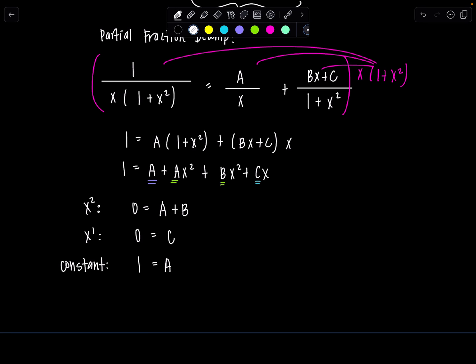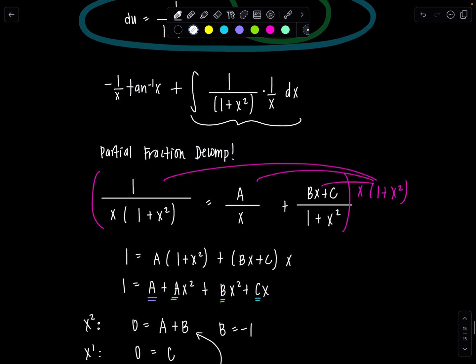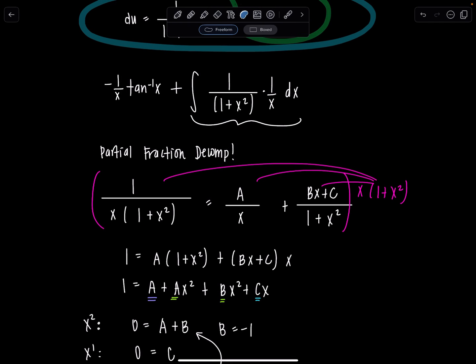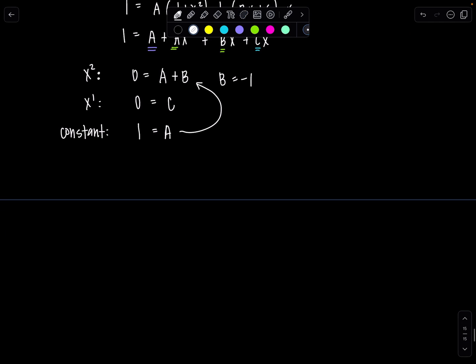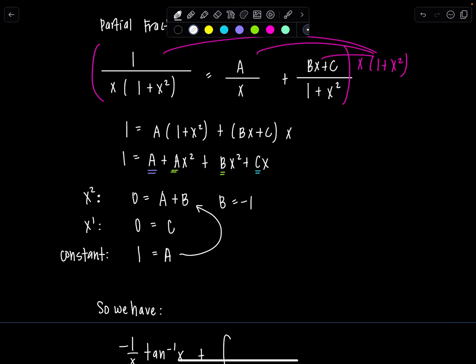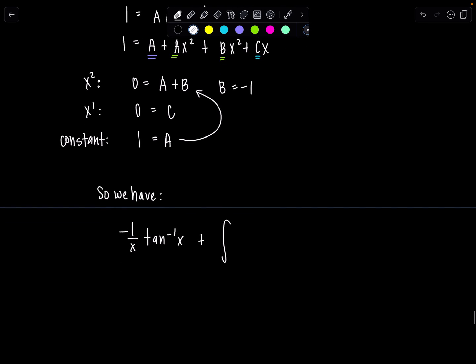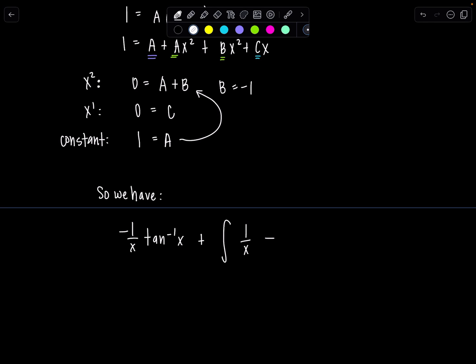So now that I know 1 is a, then that means b is negative 1. And then I'm ready to rewrite everything. So up above, we had all that negative 1 over x tan inverse of x. So now we have negative 1 over x tan inverse of x plus integral. And then a is 1, so I'll have 1 over x minus x over 1 plus x squared dx. How are we doing so far?